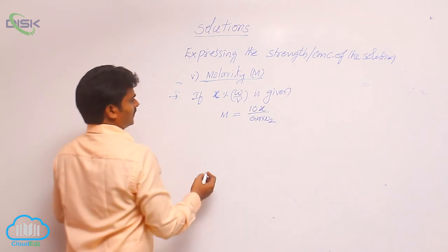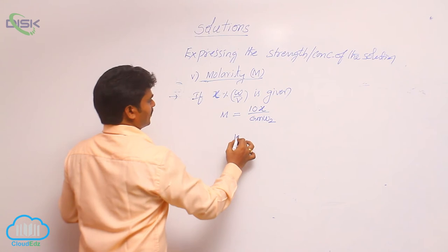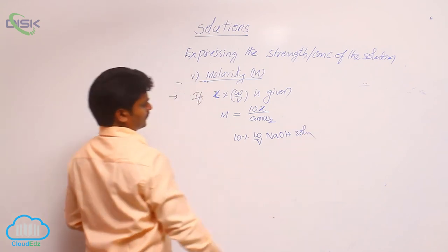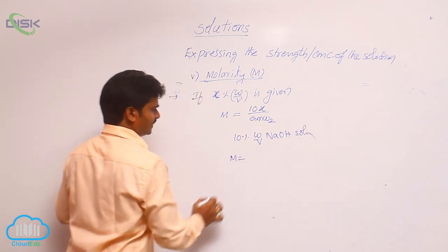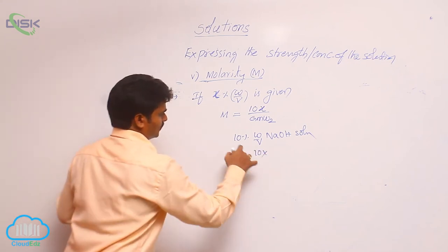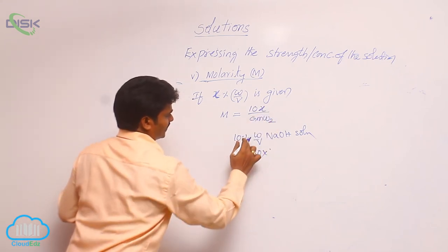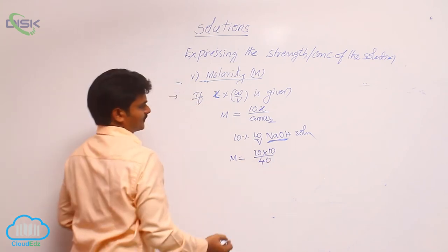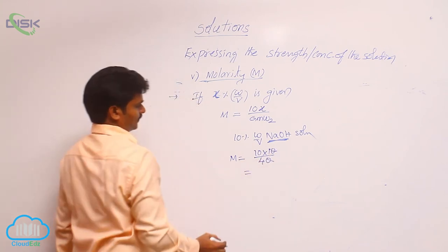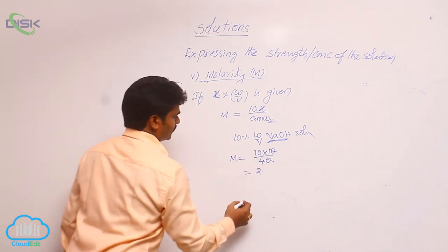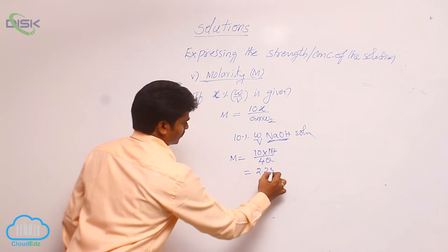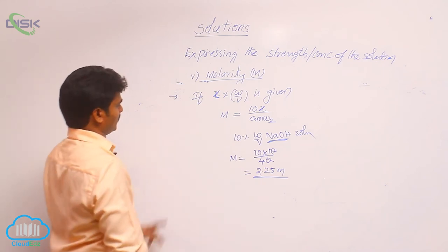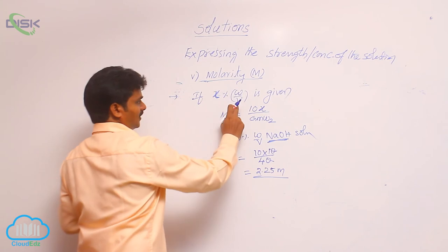See a problem: calculate the molarity of 10 percent w/v NaOH solution. Use this formula directly: molarity = 10 × 10 (in place of x, there is 10) divided by gram molecular weight of solute. Here NaOH is the solute, that is why 40. That means 10 by 4, which is 2.5. So this is the molarity of the given 10 percent w/v NaOH solution.